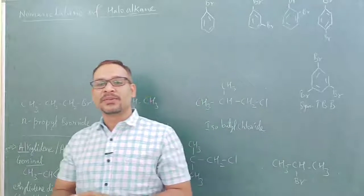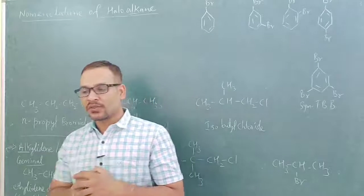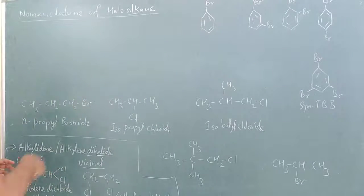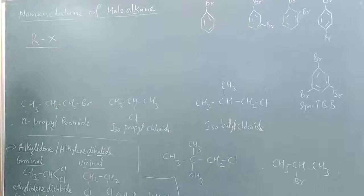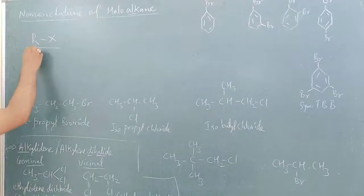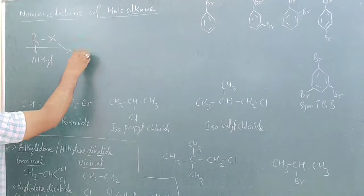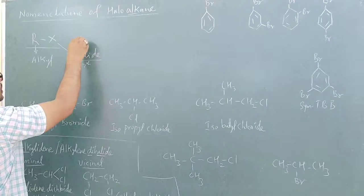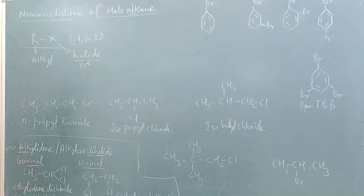Hello students, today we will talk about haloalkanes — nomenclature of haloalkanes. First of all, haloalkanes: the symbol or group representation of haloalkane is R-X, where R means alkyl and X means halogen. We also call them halides. They are 17th group elements — chlorine, bromine, iodine, like this. X means any one element or one atom, so alkyl halide.